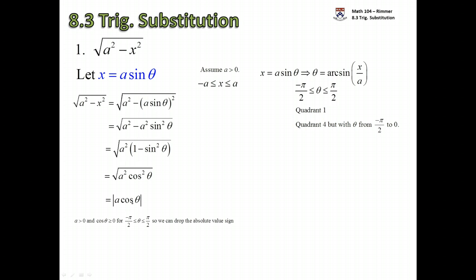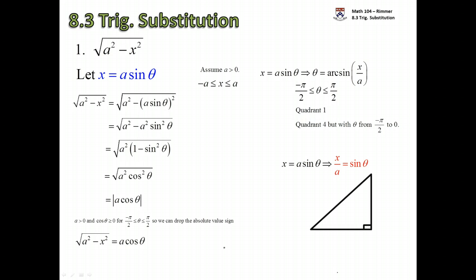Since we assumed a was greater than zero and we're focusing on angles theta in the first and fourth quadrant where cosine is always positive, we can drop the absolute value. With both factors being positive there's no need for it, and so the root is replaced by a·cos(θ). We also need to consider what happens to the angle. Letting x = a·sin(θ) and dividing by a gives x over a = sin(θ). Since sine is opposite over hypotenuse, we draw a right triangle.